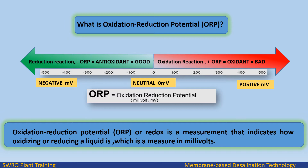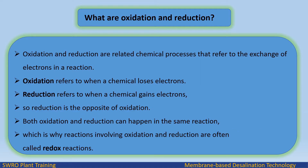Higher range of ORP antioxidant is good. Oxidation and Reduction are related chemical processes that refer to the exchange of electrons in a reaction. Oxidation refers to when a chemical loses electrons. Reduction refers to when a chemical gains electrons, so reduction is the opposite of oxidation. Both oxidation and reduction can happen in the same reaction, which is why reactions involving oxidation and reduction are often called redox reactions.